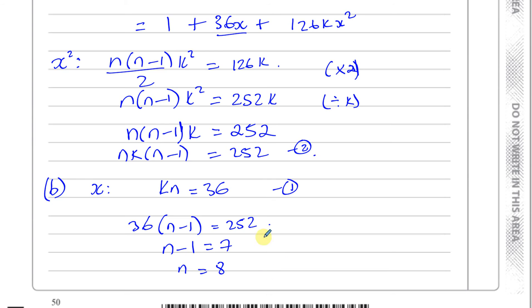And if we know that kn equals 36, okay, so we say that k times 8 equals 36. So, k must be 36 divided by 8. Okay, so 8 goes into 36, 4, 8 goes into 32, remainder 4, so it's 4.5. k is equal to 4.5, and n is equal to 8. Okay, that's the answer to part B.